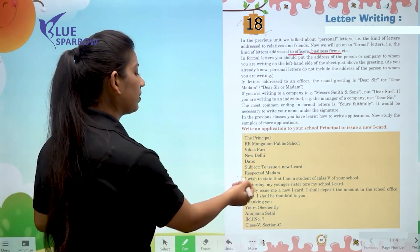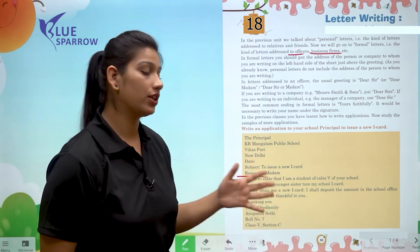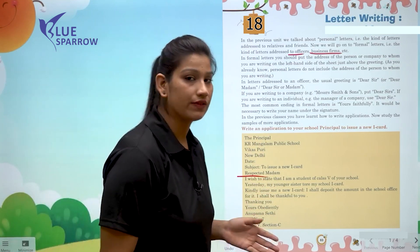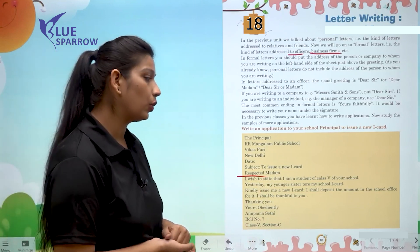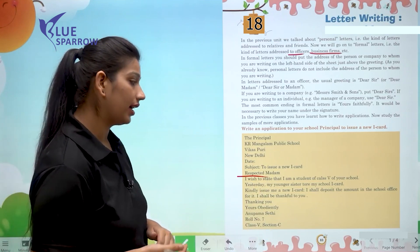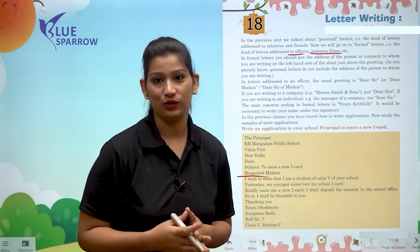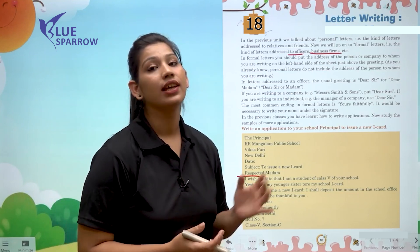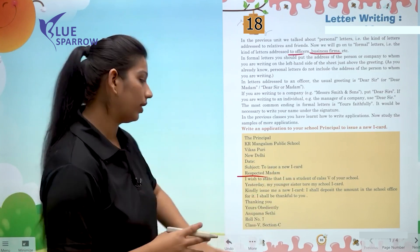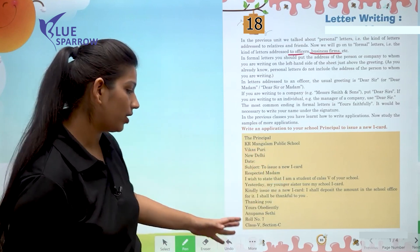Then you use 'Respected Madam' as the salutation, giving respect to your senior officials. The body reads: 'I wish to state that I am a student of Class 5th of your school. Yesterday, my younger sister tore my school I-card. Kindly issue me a new I-card. I shall deposit the amount in the school office for it. I shall be thankful to you.' Then you close with 'Thanking you, Yours Obediently, Anupama Sharma.'